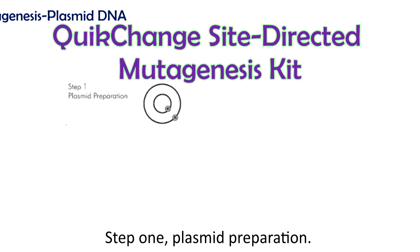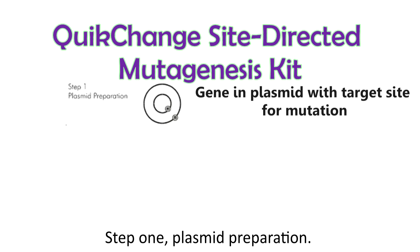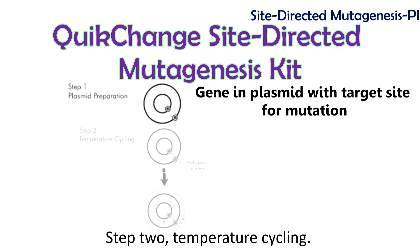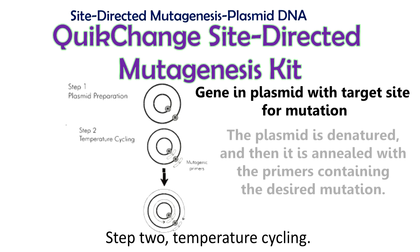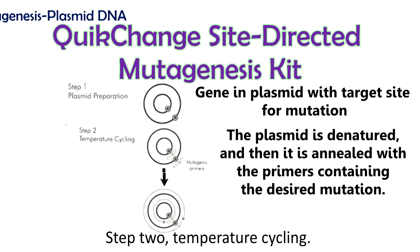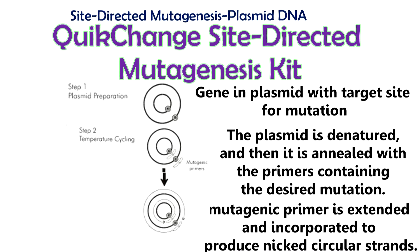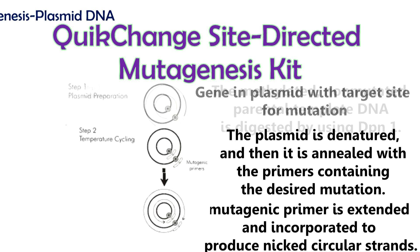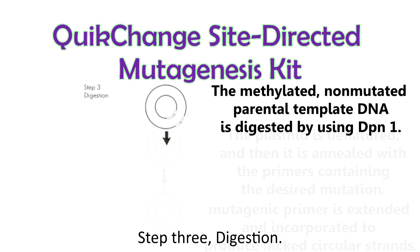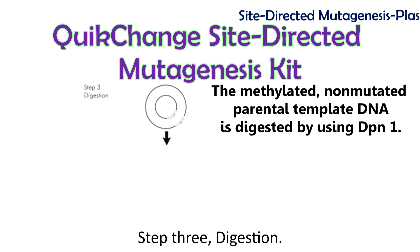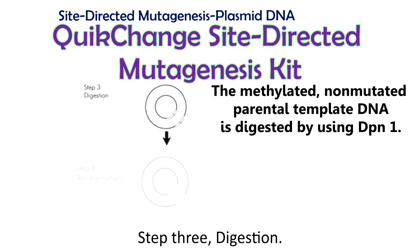Step 1 is Plasmid Preparation: the gene in a plasmid with the target site is prepared for creation of the mutation. Step 2 is Temperature Cycling: the plasmid is denatured and then annealed with the primers containing the desired mutation. The mutagenic primer is extended and incorporated by using full KOD1 polymerase to produce nicked circular strands. Step 3 is Digestion: the methylated, non-mutated parental template DNA is digested by using DpnI.